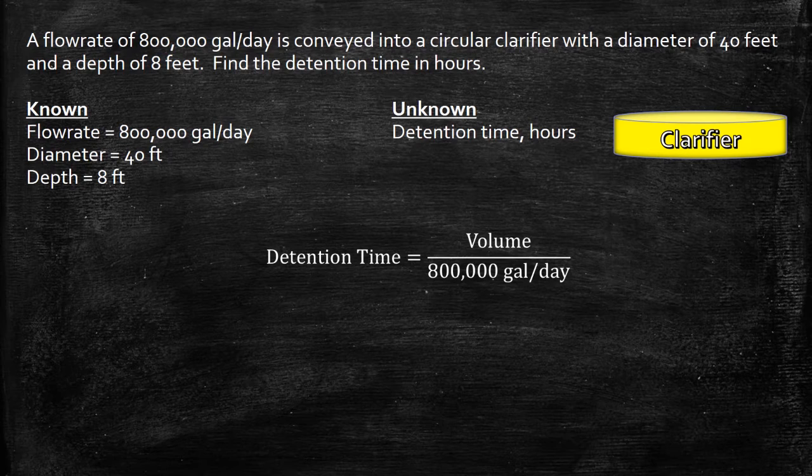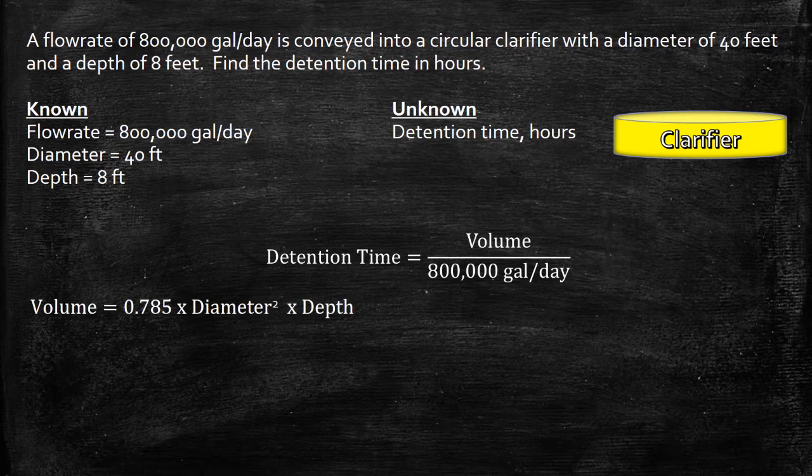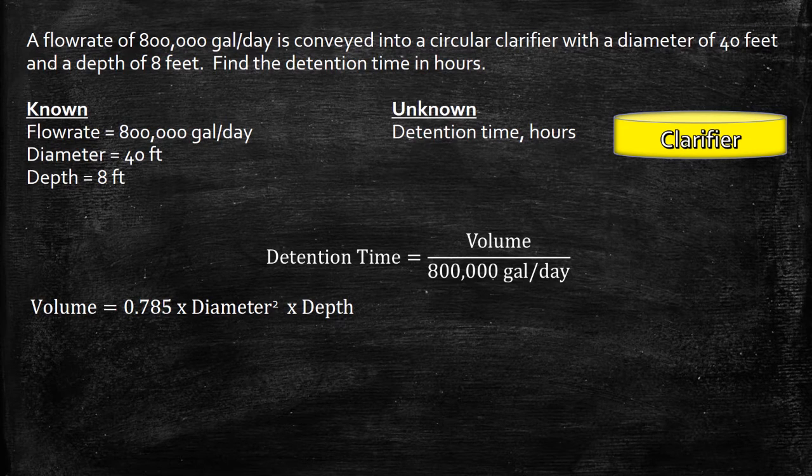The volume of this clarifier is just the volume of a cylinder. So let's write down that formula, 0.785 multiplied by diameter squared multiplied by depth. Do we have diameter and depth? If you look under the knowns, we're given the diameter is 40 feet and the depth is 8 feet. Let's plug them in.